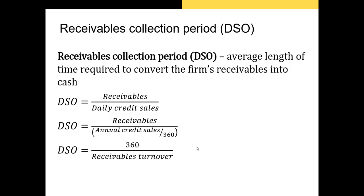The receivables collection period — sometimes called the accounts receivable period or days sales outstanding — is the average length of time it takes to convert the firm's receivables into cash. Using the simplest formula: receivables divided by (annual credit sales / 360). That gives us our days sales outstanding. Alternatively, if you have receivables turnover, just take 360 divided by receivables turnover.